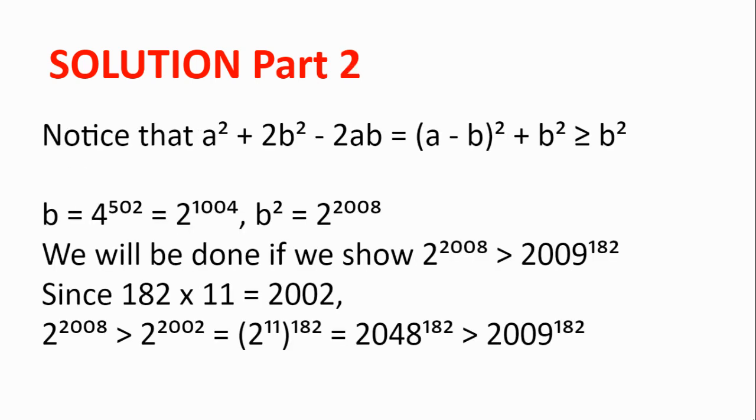Notice that a squared plus 2b squared minus 2ab can be factorized as a minus b squared plus b squared. And because squares are non-negative, that is greater or equal to b squared.